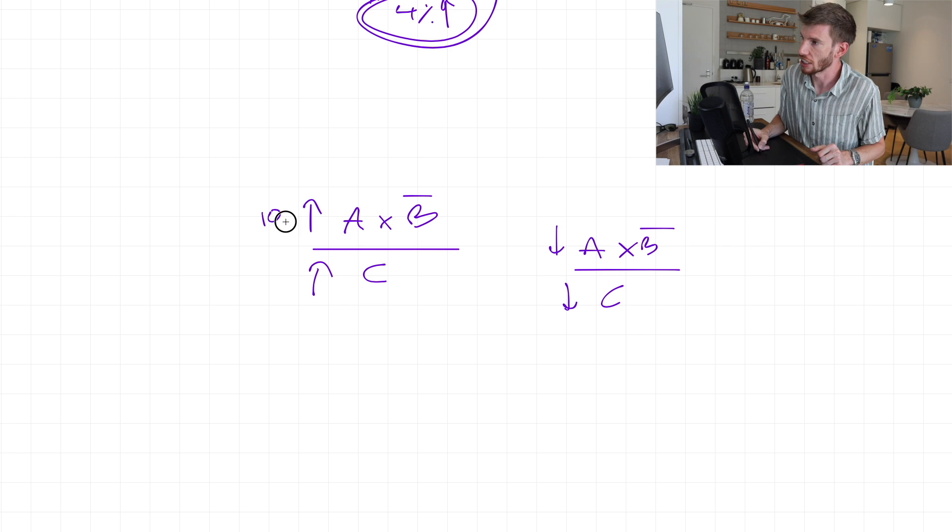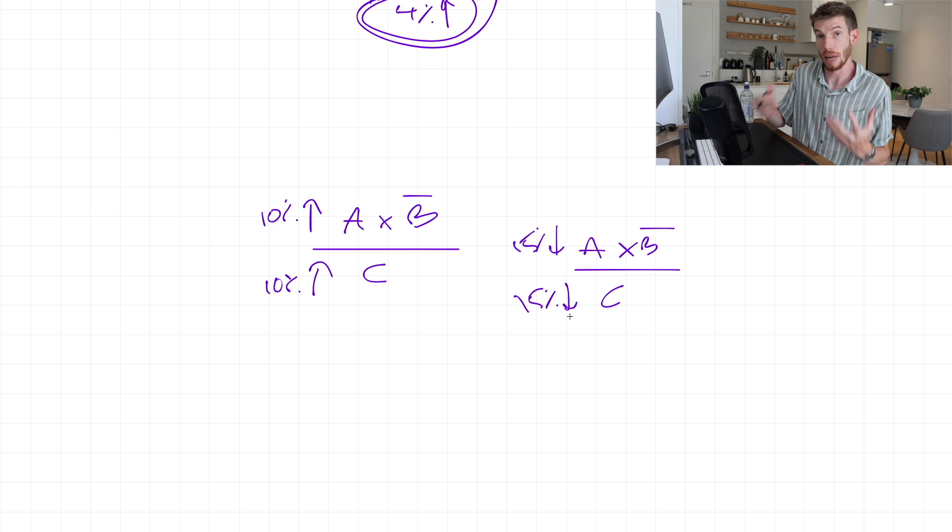So again, if I have a 10% increase up here, I want a 10% increase down here, then it cancels out. If I have, say, a 15% decrease here, and a 15% decrease here, it doesn't matter, because I'll end up getting the exact same answer.